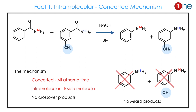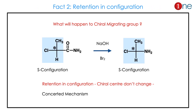The product preserves itself, and migration and everything happen within the molecule. So you should know the Hofmann reaction goes through a concerted mechanism. The next fact: if the migrating group has a chiral carbon, retention of configuration occurs — meaning there is no change in the chiral carbon. The configuration stays the same, since the mechanism is concerted.